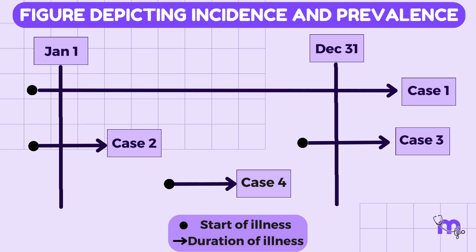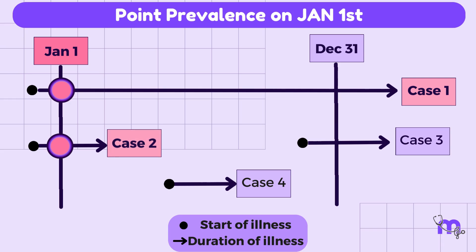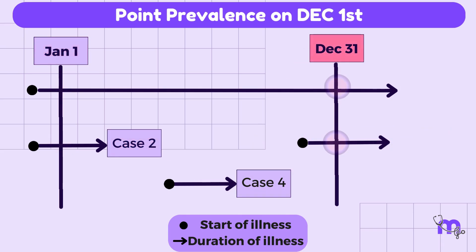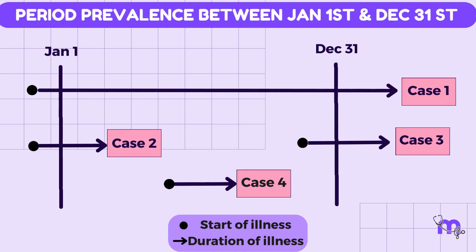Let us see this figure and understand the point and period prevalence along with the incidence of a particular disease. Point prevalence on January 1st is equal to 2, as case 1 and case 2 are present on January 1st. Point prevalence on 31st December is equal to 2, as case 1 and case 3 are present on this day. Period prevalence between 1st January and 31st December is equal to 4, as all 4 cases are present in this period.